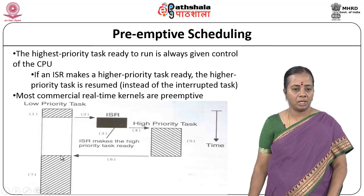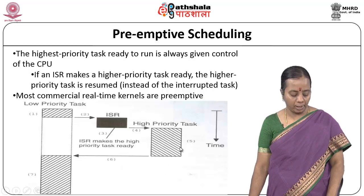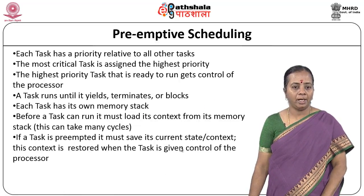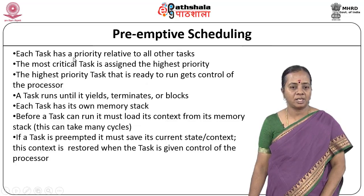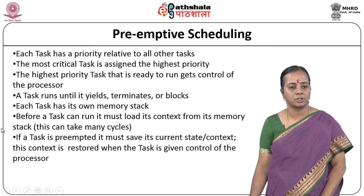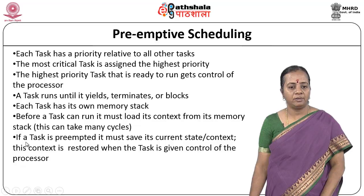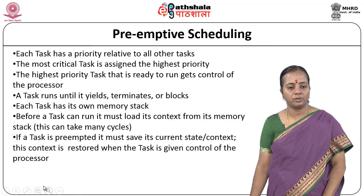Commercial real-time kernels are all preemptive so you can run processes which need the topmost priority. Each task has a priority relative to all other tasks. The most critical task is assigned the highest priority, and the highest priority task that is ready to run gets control of the processor. A task runs until it yields, terminates, or blocks. Each task has its own memory stack. Before a task can run, it must load its context from its memory stack, and if the task is preempted, it must save its current state. The context is restored when the task is given control of the processor.